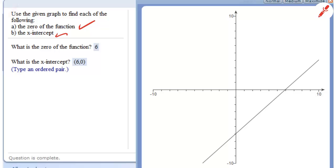It's the x-intercept, but the number x equals 6. This is 1, 2, 3, 4, 5, 6. This is x equals 6. 6 is the zero of the function. It's not the x-intercept. The x-intercept is the point.